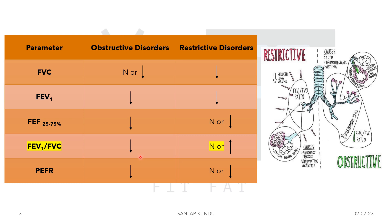In very severe COPD with chronic respiratory failure, the FEV1/FVC ratio is less than 70% but the FEV1 is less than 30% of the predicted value. So the FEV1 value decreases with the increase in the intensity of the obstructive disorder. But in case of restrictive disorder, it is very important to know that the FEV1/FVC ratio may seem normal or can even increase — it can reach up to 90%. For obstructive disorder the value decreases, and for restrictive disorders it is either normal or increased.